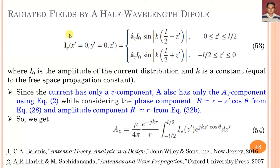The current for the electric conductor I(x'=0, y'=0, z') is expressed by the given expression. This is the sinusoidal current distribution as observed from figure 5B for L equal to lambda by 2, or figures 5C and 5D. For different lengths, the current distribution is in the form of a sinusoidal function where I₀ is the constant amplitude, and K is the free space propagation constant. Since the current has only a Z component, A has only the AZ component using equation 2, the generalized equation for the magnetic vector potential.